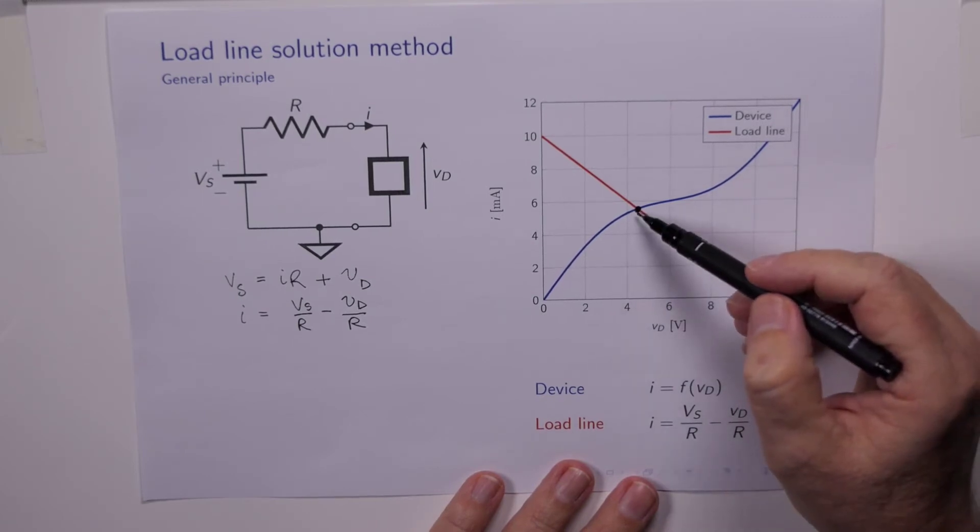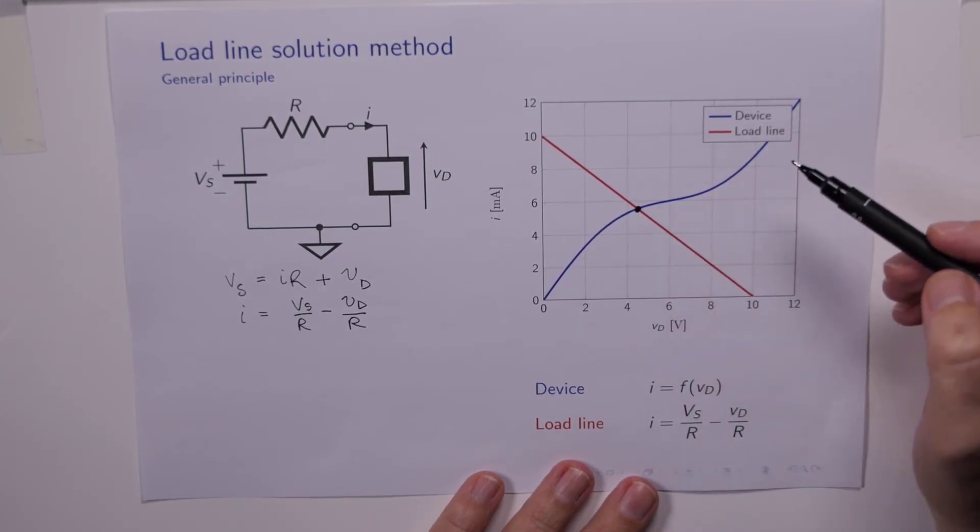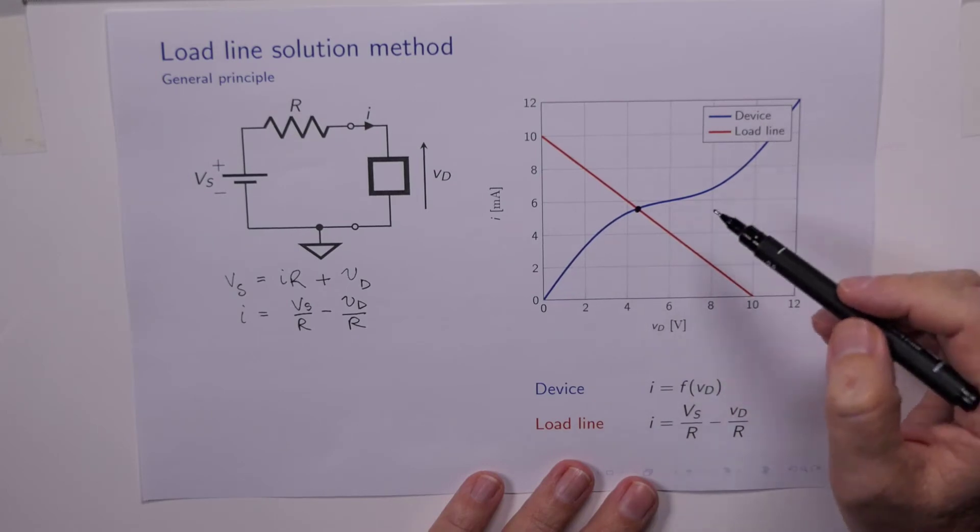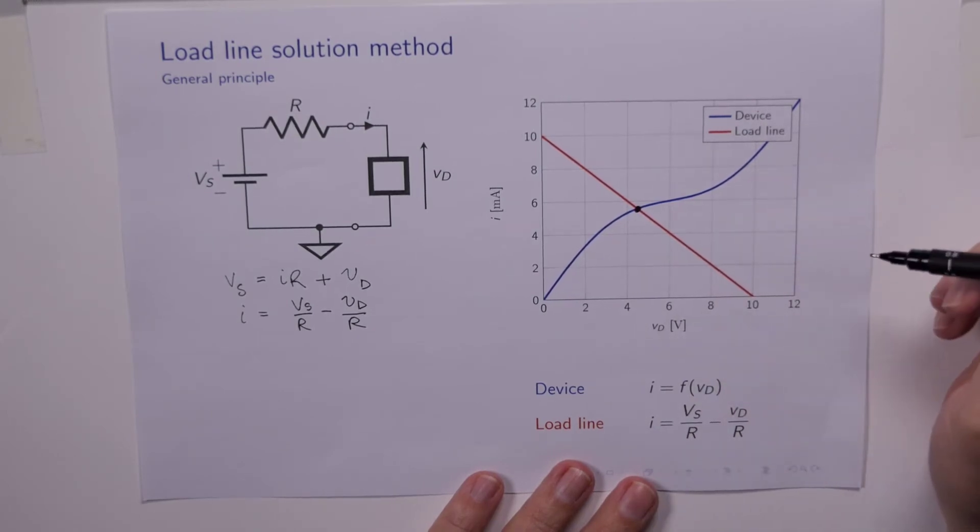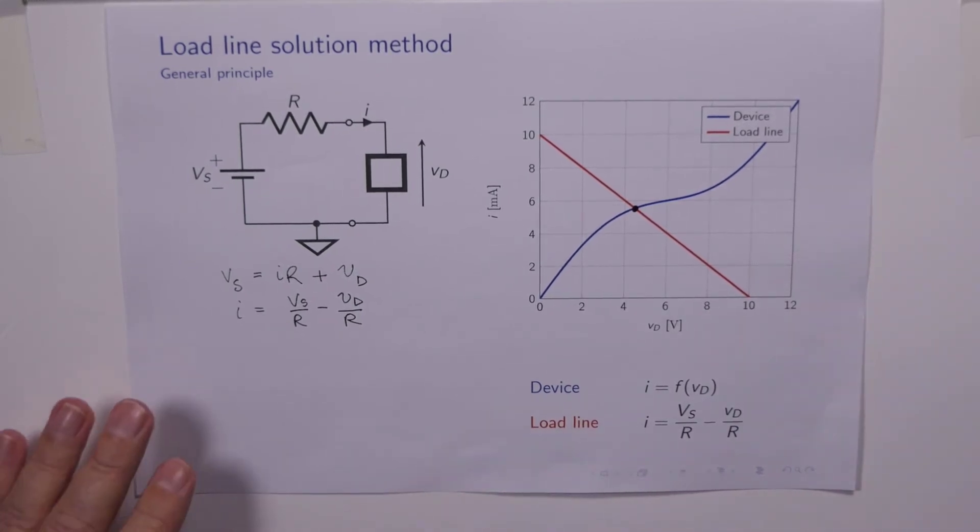And it shouldn't be too hard to see that it must correspond to the point where these two things intersect. This is the only place where both curves have the same value of current, and of course they'll have the same value of voltage. So you've done this a million times in your maths courses, solving simultaneous equations. We're just doing it as it pertains to electronics.